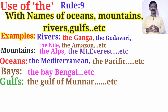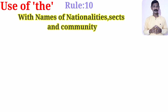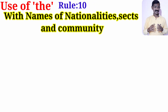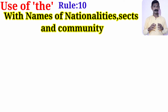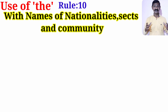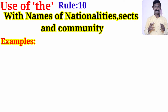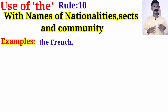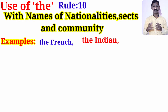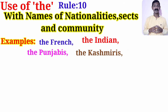We use article 'the' with the names of nationalities, sects, and communities. For example, in the case of nationalities: the French, the Indians. In the case of communities: the Punjabis, the Kashmiris. In this way we use article 'the'.